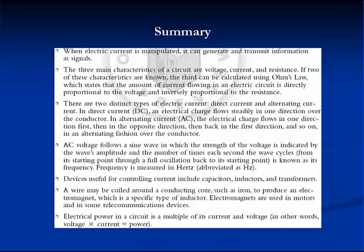Devices useful for controlling current include capacitors, inductors, and transformers. A wire may be coiled around a conductor core, such as iron, to produce an electromagnet, which is a specific type of inductor. Electromagnets are used in motors and some telecommunication devices.